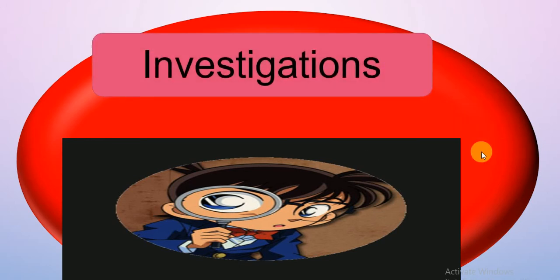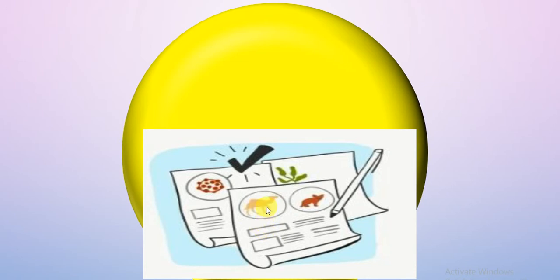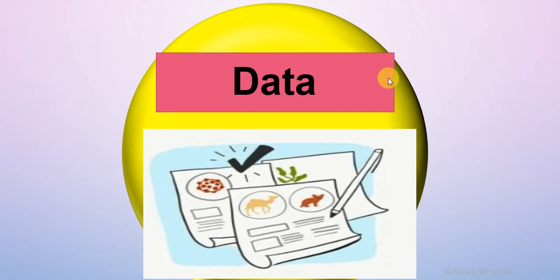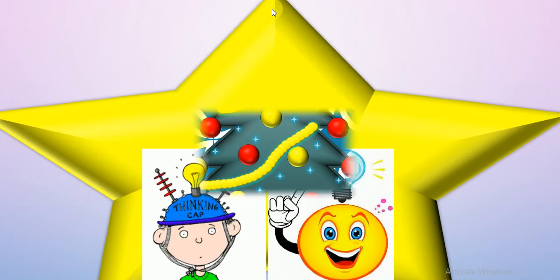Number eleven shows a picture of Conan looking for answers — so he is doing an investigation. Excellent, good job! Number twelve shows papers with paintings, words, numbers, and photos. This is information I collect and record while doing the test — so this is called data. Excellent, guys — data!